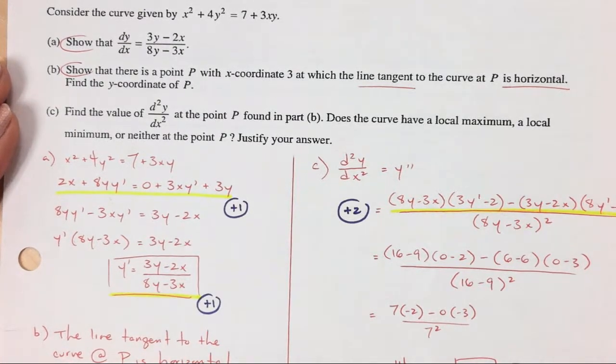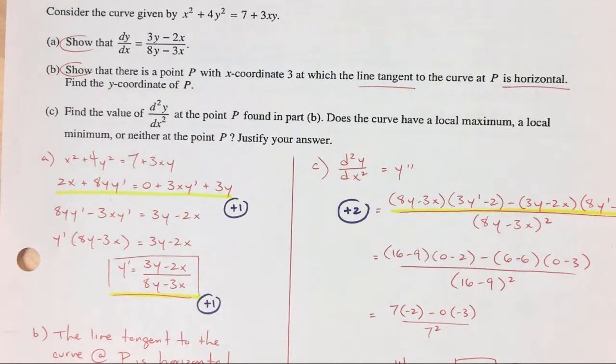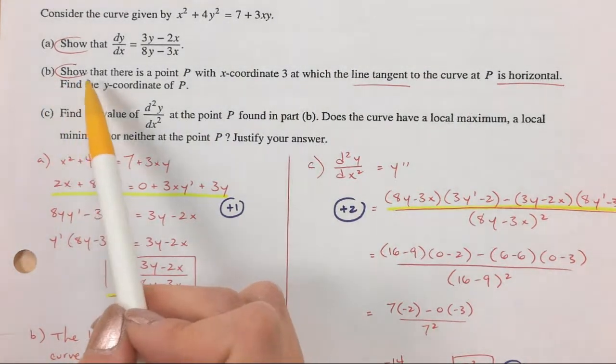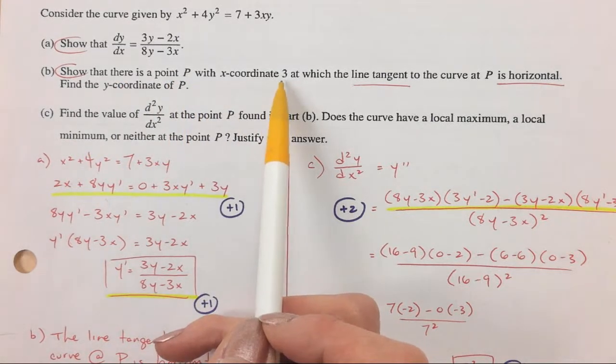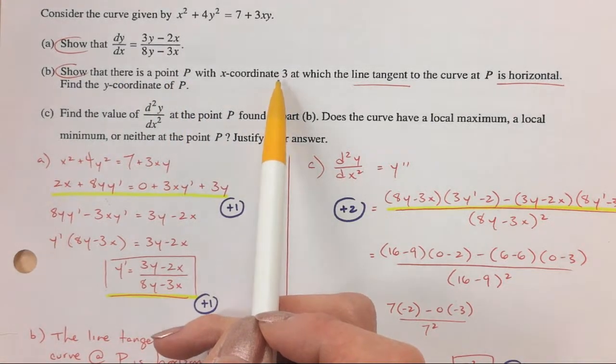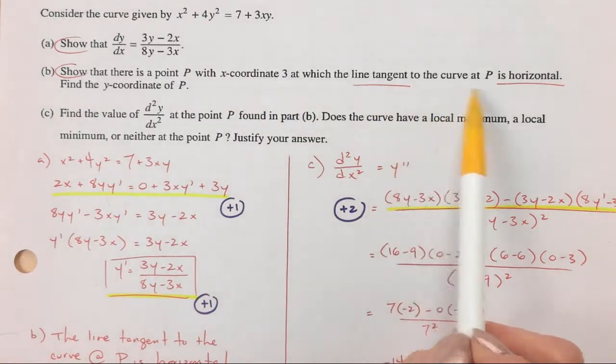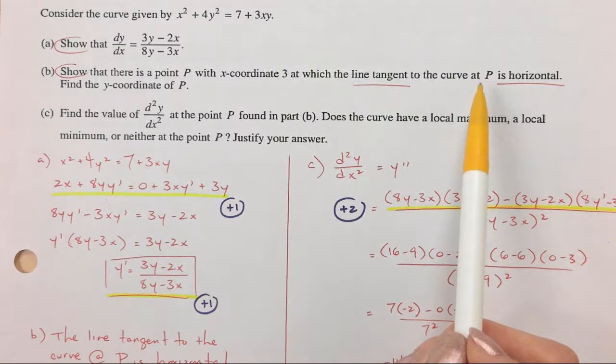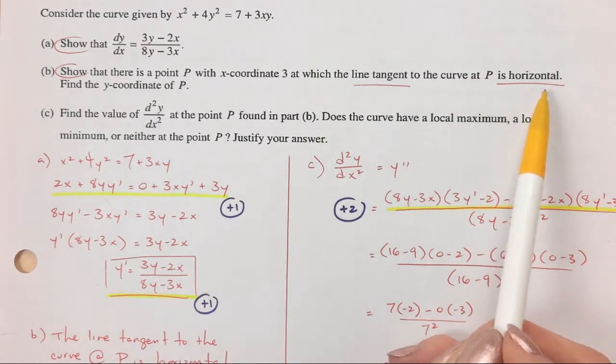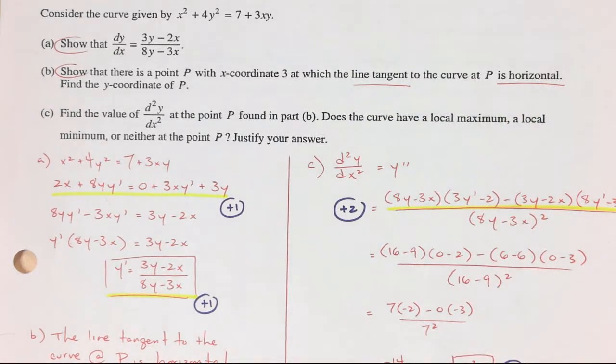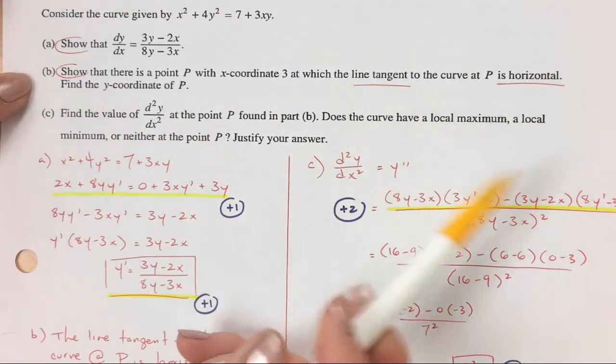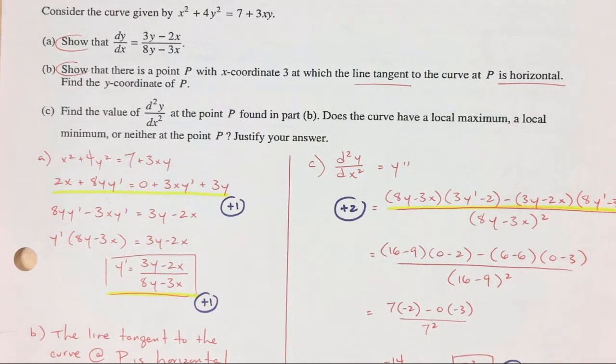Okay, so the reason they give you this is actually for the next part. The next part says, show, again with the show. Show that there is a point P with x-coordinate 3. So they're telling you already the x is 3. At which the line tangent to the curve, so the tangent line at that point is horizontal. Okay, so that means that the tangent line is supposed to have a horizontal slope. That means, and I'm going to write it nicely, because when they say show, and there's all this stuff going on, I'm not exactly sure what they want.